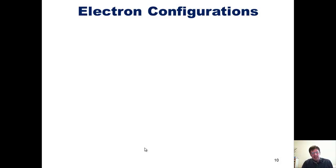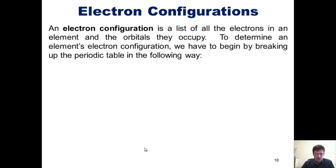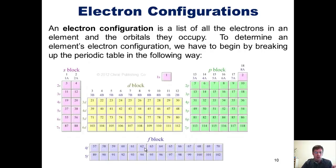Now we'll move on to a new but slightly related subject, that of electron configurations. What is an electron configuration? An electron configuration is a list of all the electrons in an element and the orbitals that they occupy. To determine an element's electron configuration, we have to begin by breaking up the periodic table in the following way.